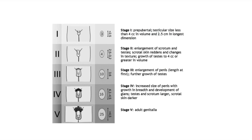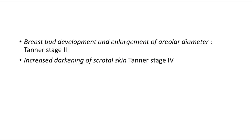Tanner staging in males: stage 1 pre-pubertal (testis less than 4cc), stage 2 enlargement of scrotum and testis (≥4cc), stage 3 enlargement of penis, stage 4 increased penis size with glans development and darker scrotal skin, stage 5 adult genitalia. Clinical examples: breast bud development is Tanner stage 2 in females; increased darkening of scrotal skin is Tanner stage 4 in males.